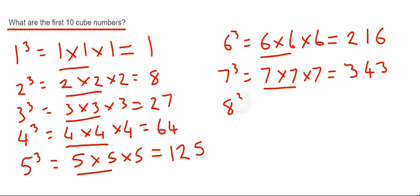Let's do 8 cubed next. So 8 cubed would be 8 times 8 times 8. So 8 times 8 is 64. And then if we times that by another 8, it gives us 512.